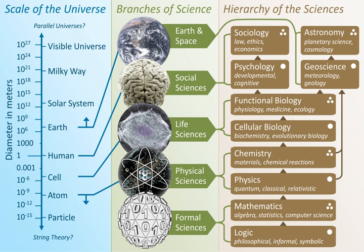Natural science is a branch of science that seeks to elucidate the rules that govern the natural world by applying an empirical and scientific method to the study of the universe. The term natural sciences is used to distinguish it from the social sciences, which apply the scientific method to study human behavior and social patterns, the humanities, which use a critical or analytical approach to the study of the human condition, and the formal sciences.